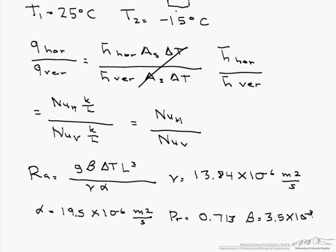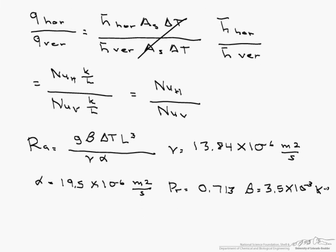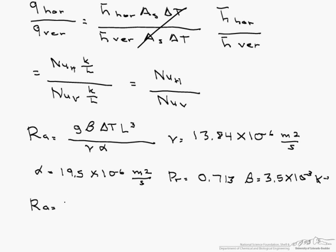Our Pr is 0.719, beta is 3.8 times 10 to the minus 3 inverse K. So when we calculate our Rayleigh number, we get 4.11 times 10 to the 7.